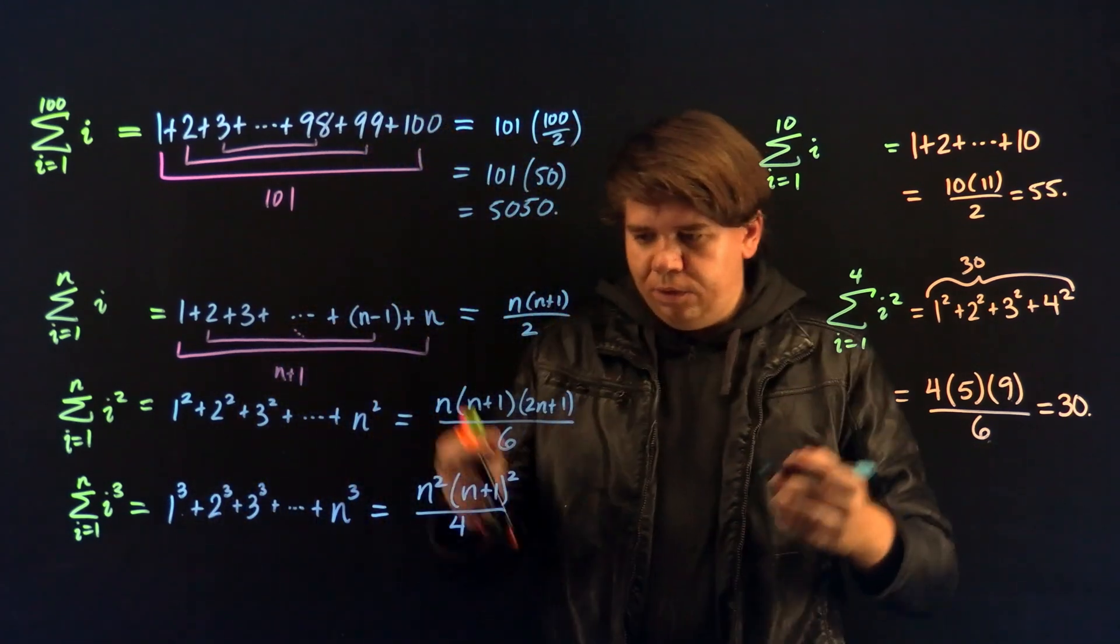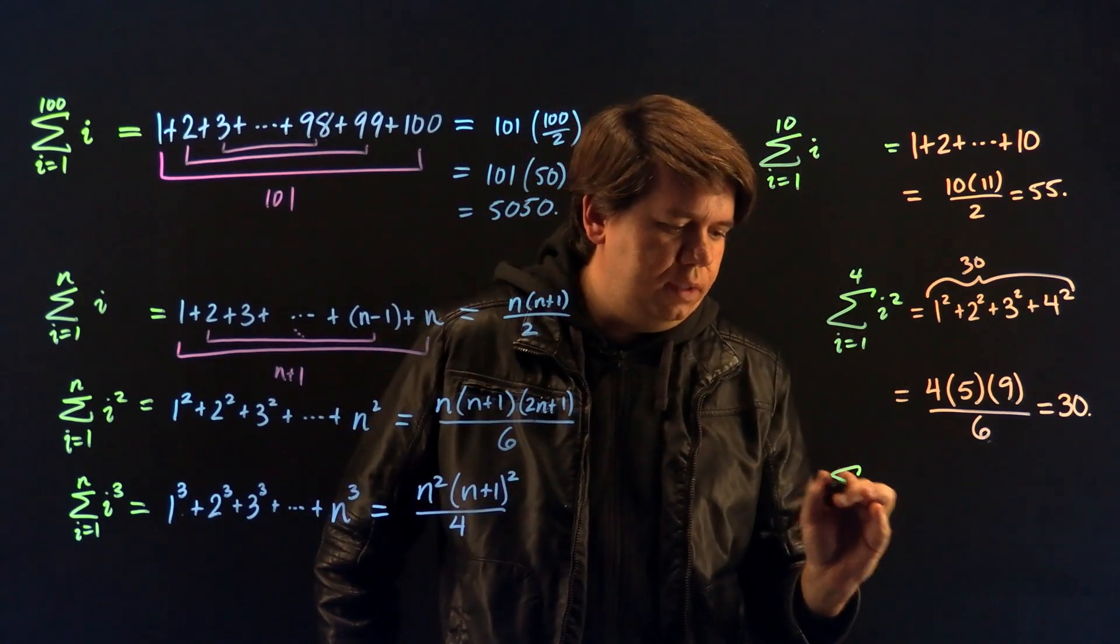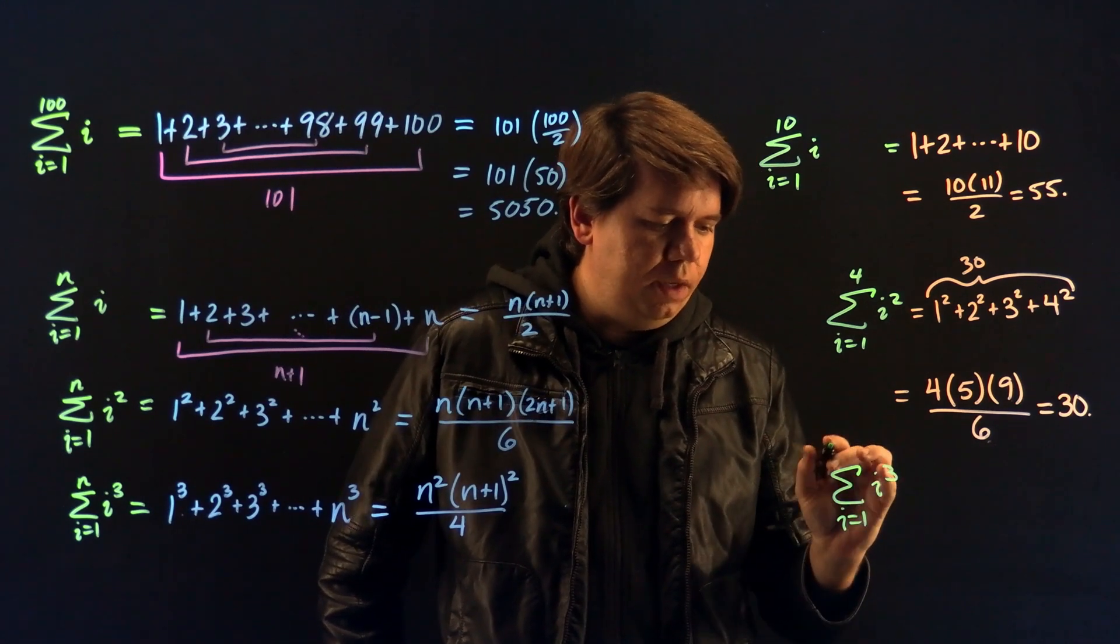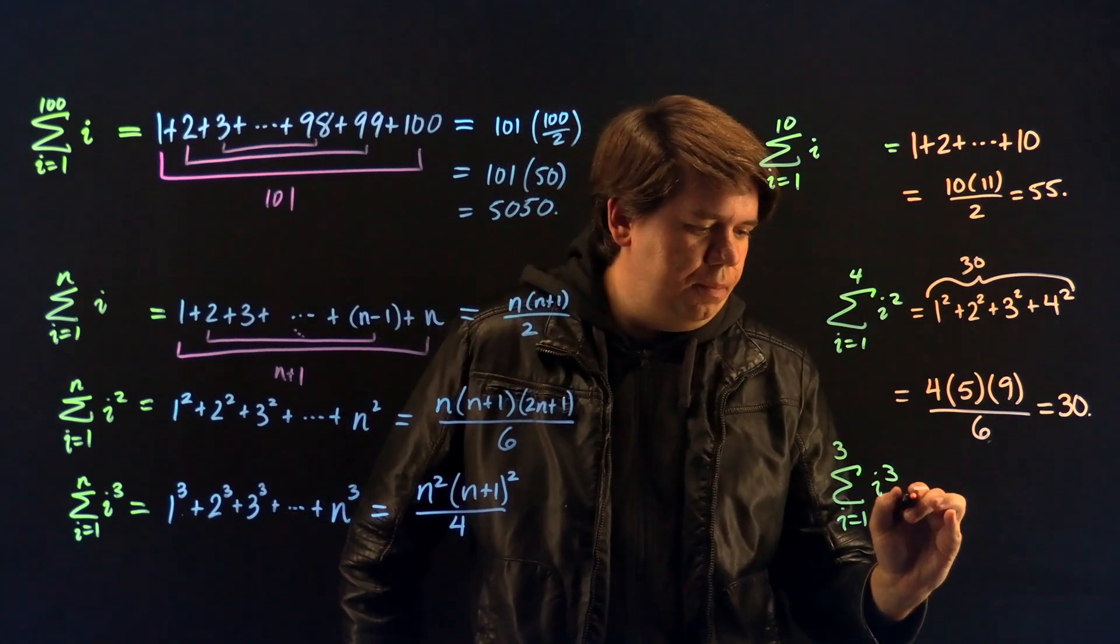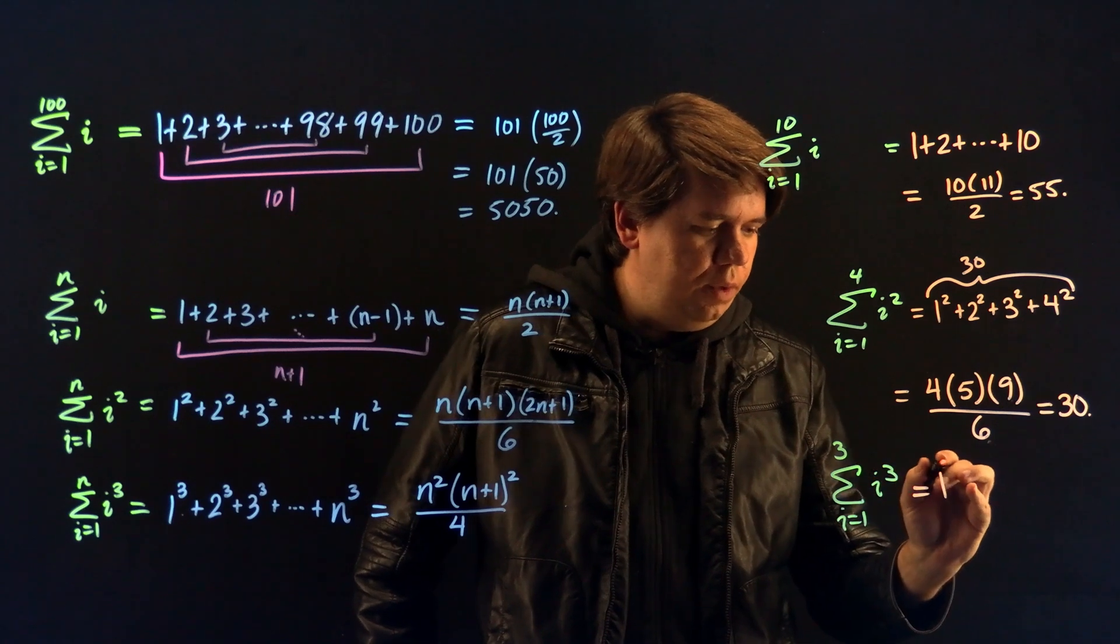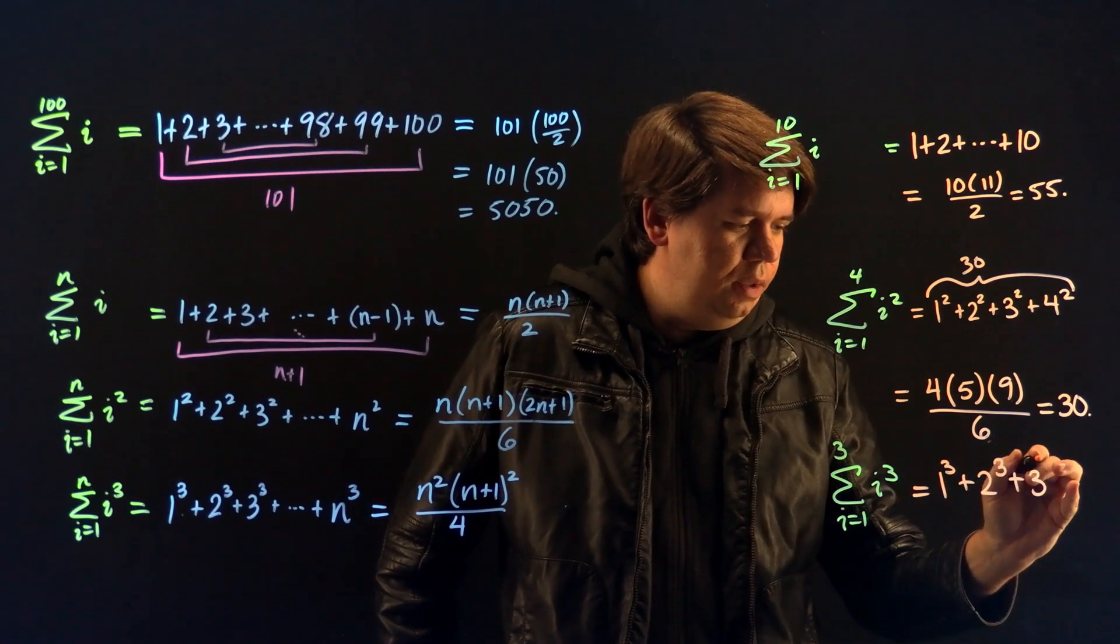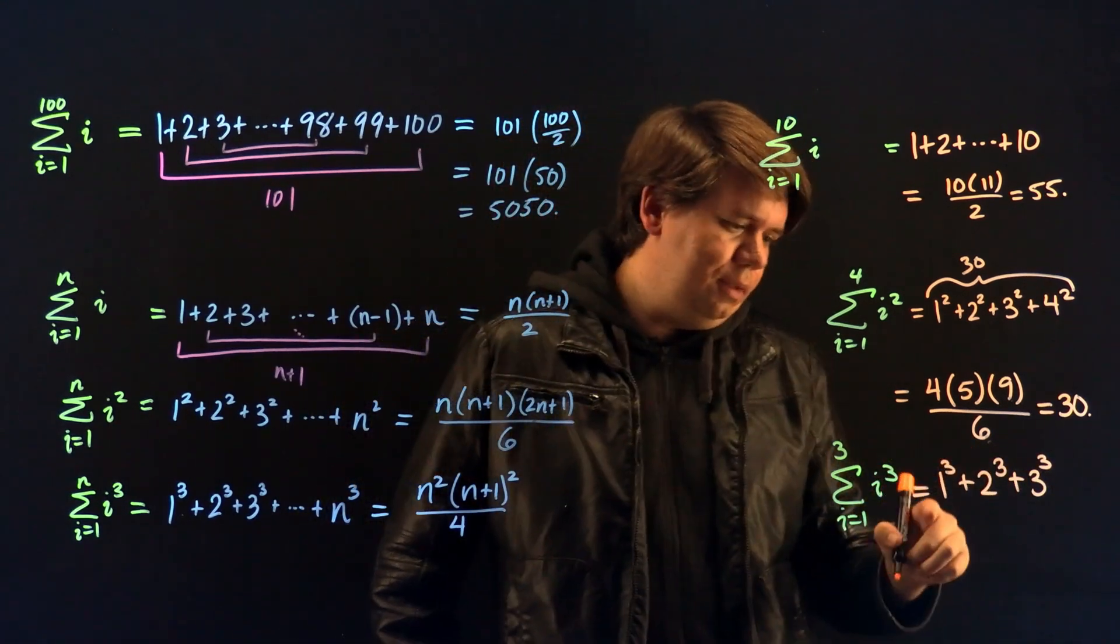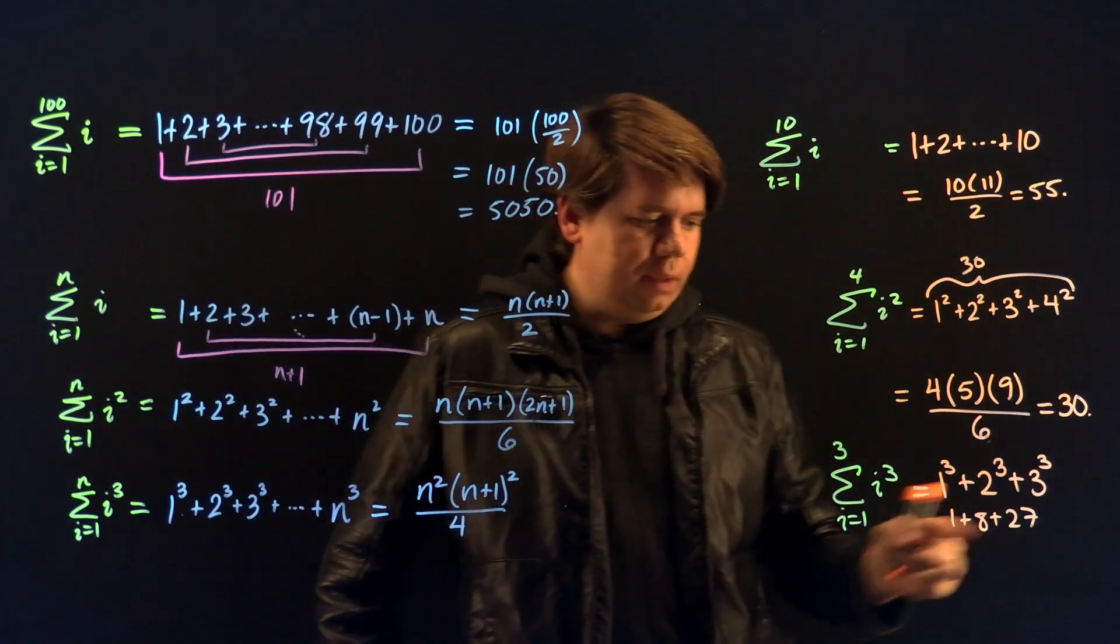So again, you can do an example and check this. Maybe we'll just do a quick one. Let's say I want to ask, what is the sum of i cubed from i equals 1 to 3? So this comes out to be, this just means, this represents, this is just asking, what is 1 cubed plus 2 cubed plus 3 cubed? Now, it wouldn't be too hard to verify explicitly what that is. You know, that's just asking, what is 1 plus 8 plus 27? It should be 36, right?